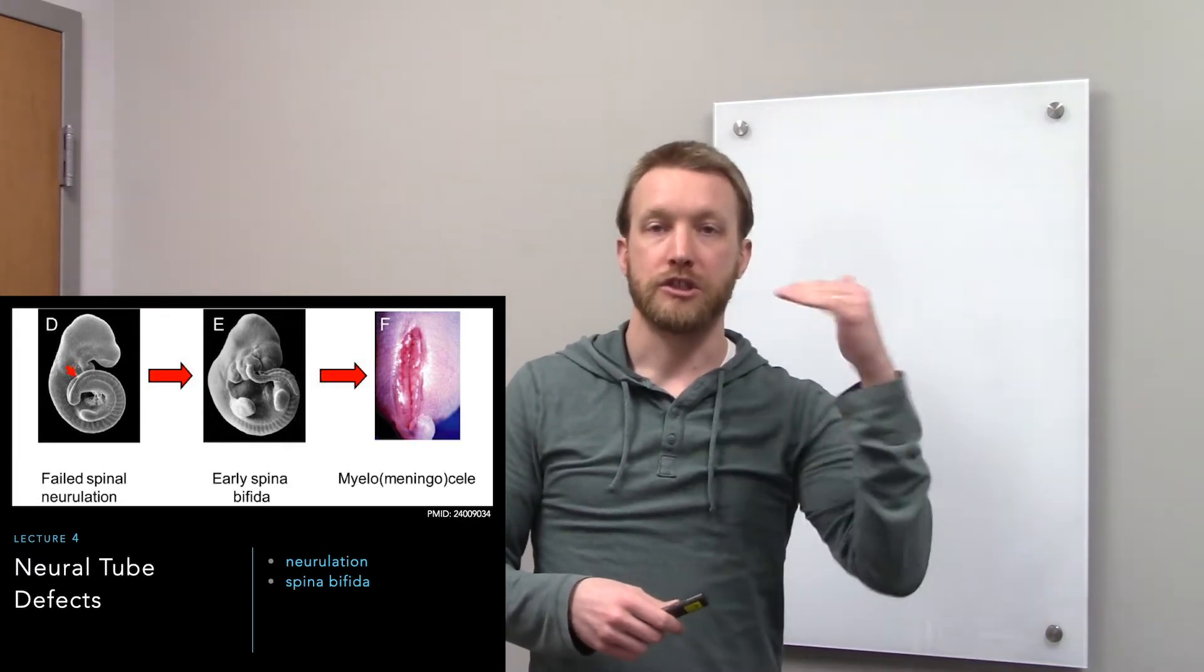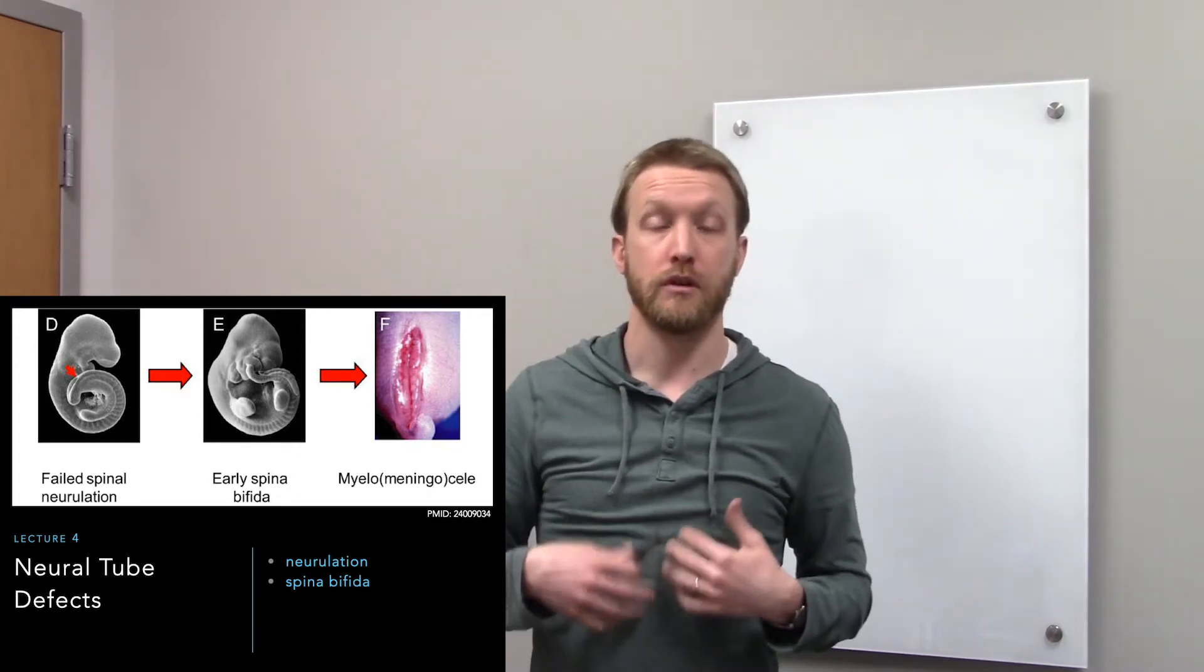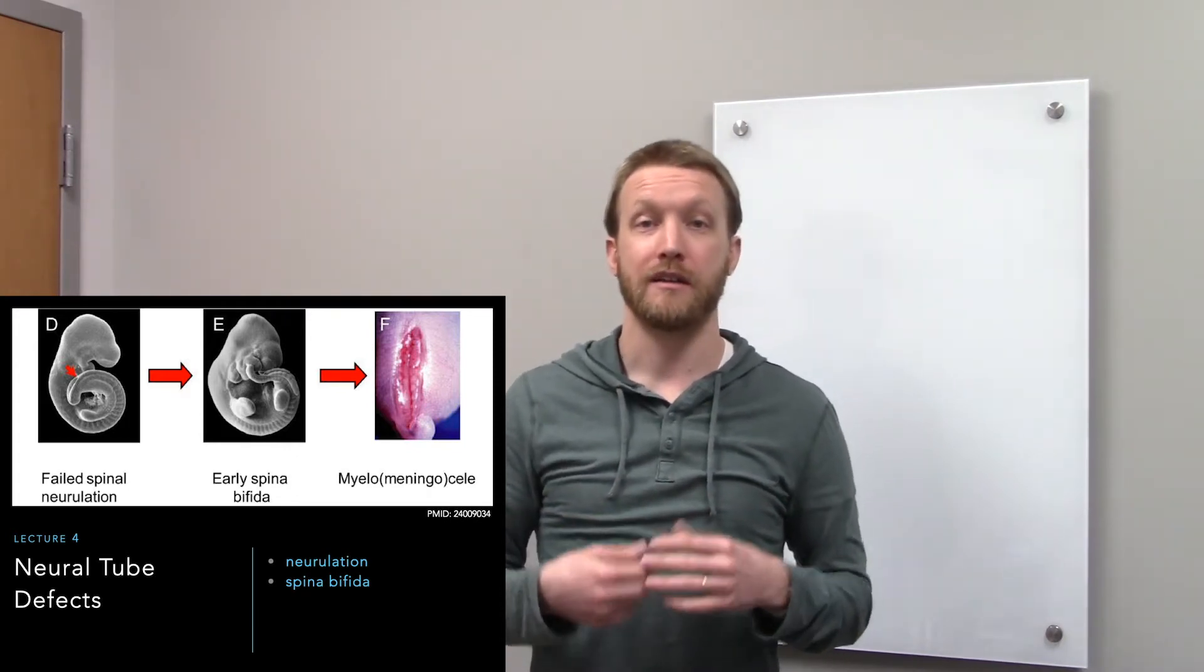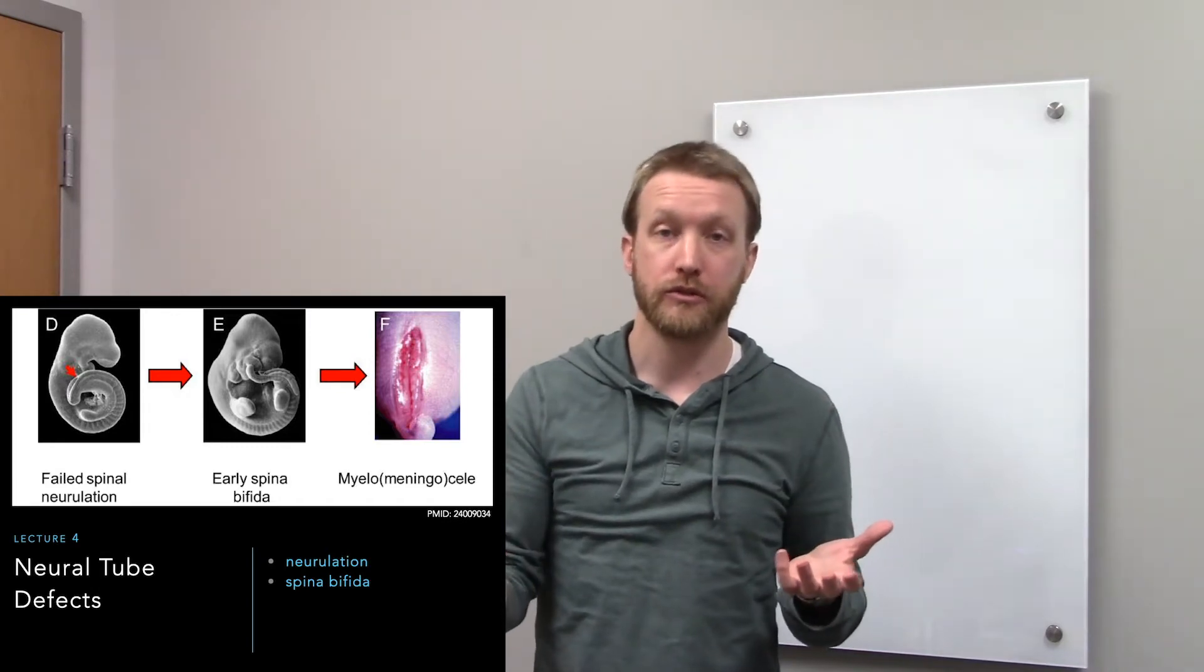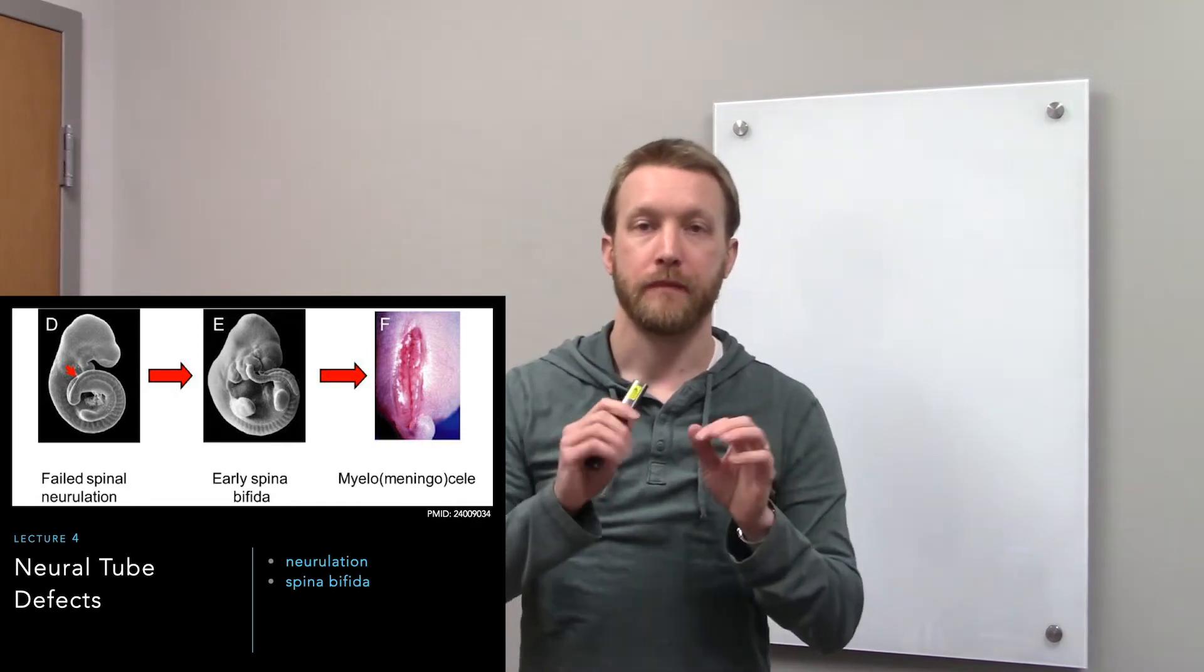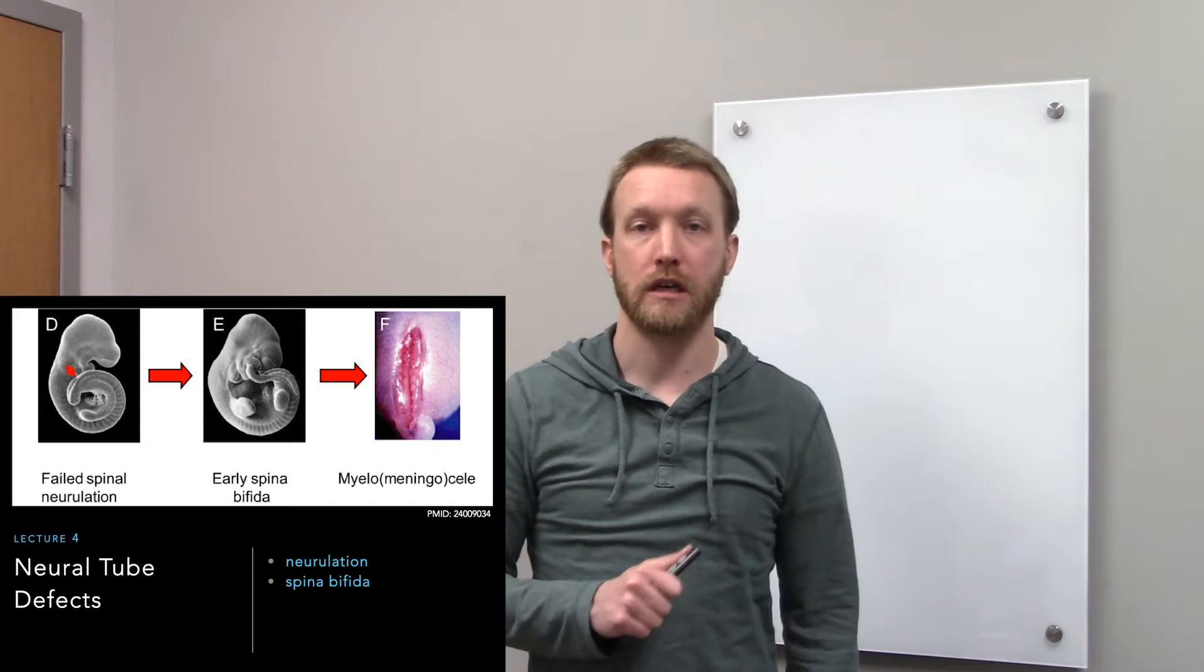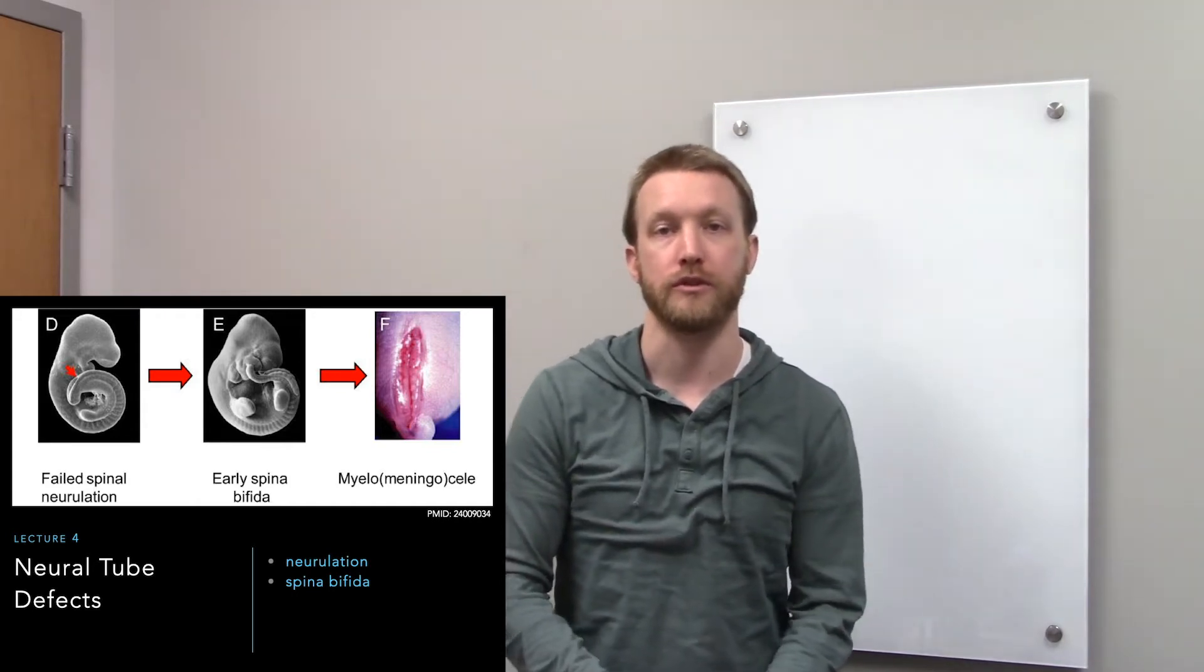Then we take those sheets of cells and create some tubes. The endoderm will create the tube that we call our digestive tract. The ectoderm is going to create the tube of our nervous system, as well as the skin. And between them, the mesoderm, which creates the musculoskeletal system.